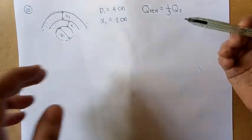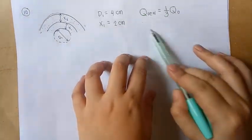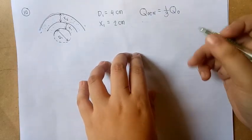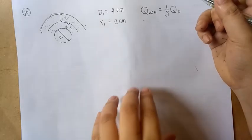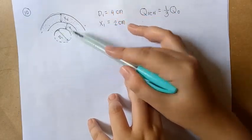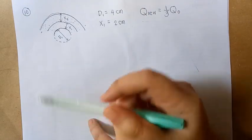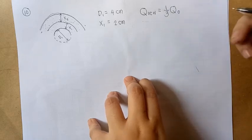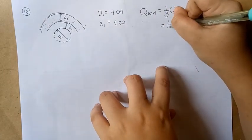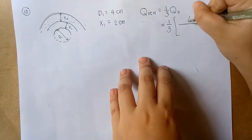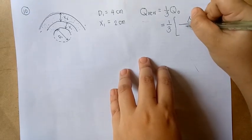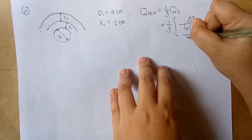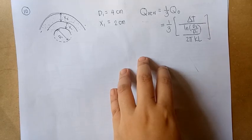We'll use this equation to solve: Q new equals one-third of Q original. What is Q original? The original Q is this - when there's only one insulation layer. We have D1 with one insulation, meaning a homogeneous cylindrical wall. The formula for homogeneous is delta T divided by ln(D2/D1) over 2πKL.